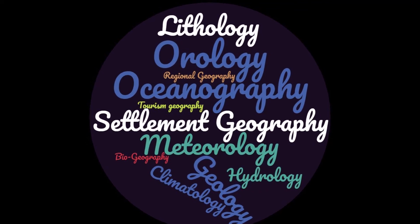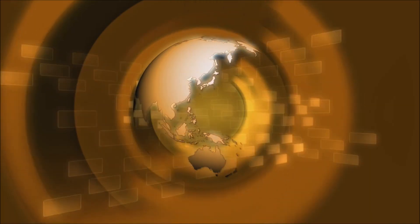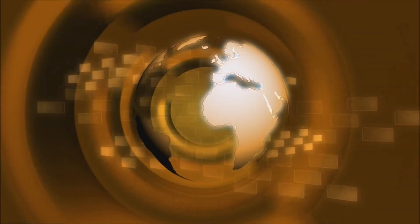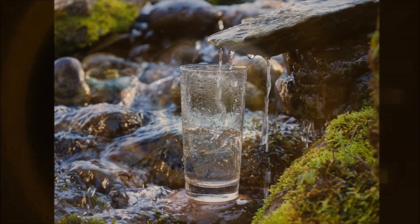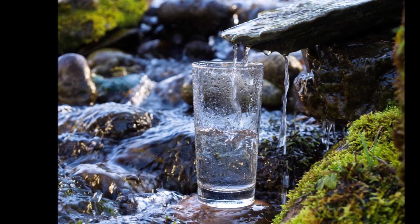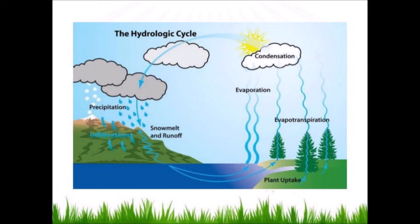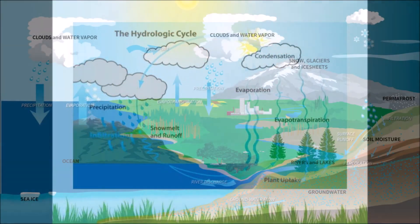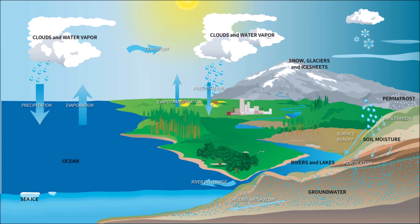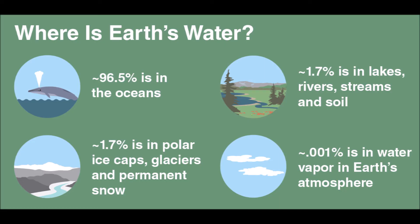I'm trying to keep this a short video, so I won't explain all these sub-branches, but I'll pick a few. For example, hydrology concerns the amount, the quality of water, and its movement across the earth's surface. You may be familiar with hydrology because you learned about the water cycle — also known as the hydrological cycle.